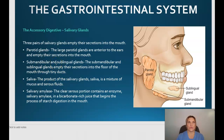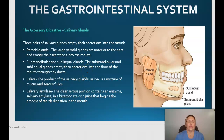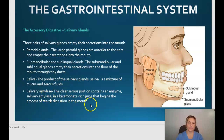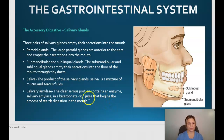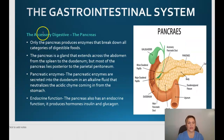If you eat something very sour like a lemon, you can feel those sublingual glands start to excrete their secretions. The product of the salivary glands is saliva, a mixture of mucus and serous fluid. Salivary amylase is a clear serous component containing an enzyme in a bicarbonate-rich juice that begins the process of starch digestion in the mouth. Only the pancreas produces enzymes that break down all categories of digestible foods.